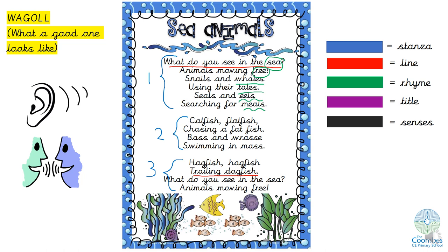Where's the title then? The title is at the top and that is 'Sea Animals'. What about the senses — what senses are being used? This poem is all about what you can see in the sea, so that is the sense that is being used. Fantastic if you could identify those features in the poem.